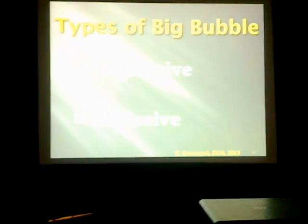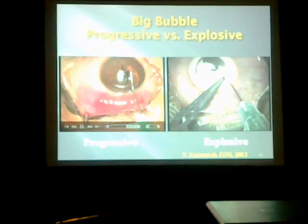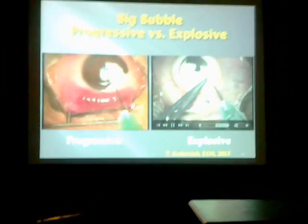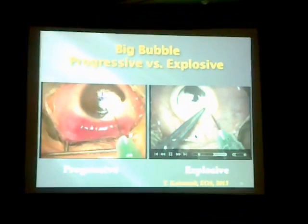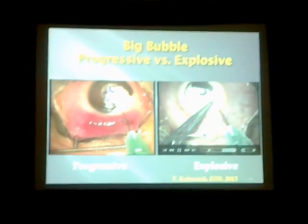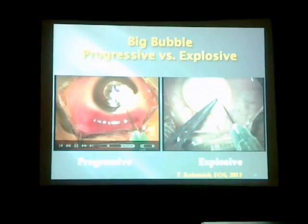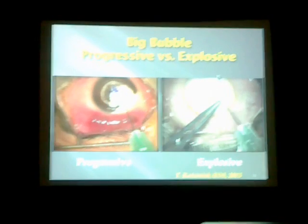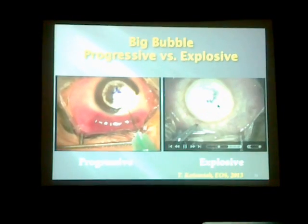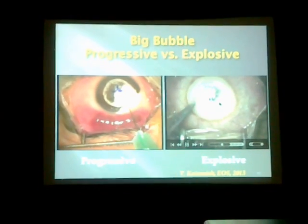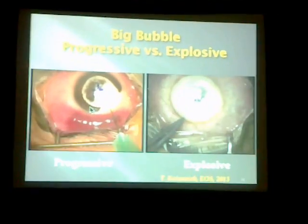The types of big bubble vary: it may be progressive, coming slowly, or it may come suddenly — a sudden explosion of the bubble. And this one is coming very gradually.